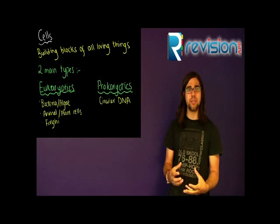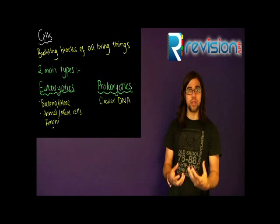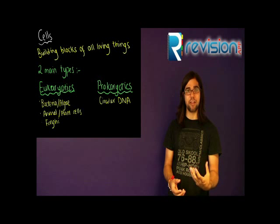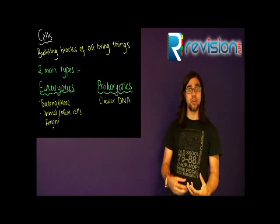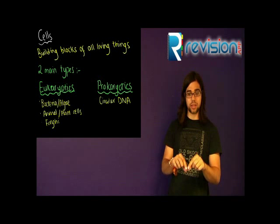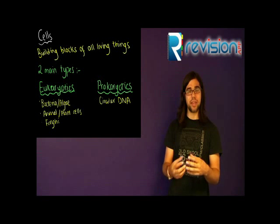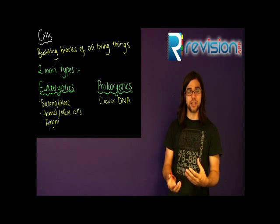Now we're going to look at a few differences and similarities, though there are more that you can look into. For example, first of all you would find a cell wall in prokaryotes, and you would find that in plant cells of the eukaryotes, but not animal cells. The cell wall in plants would be a cellulose cell wall, and the makeup in different prokaryotes is slightly different.